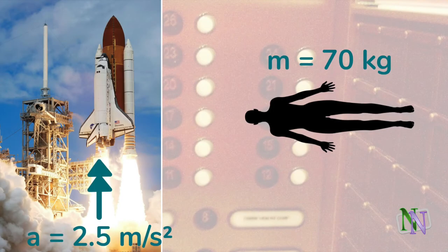Here is the information. Her acceleration is 2.5 metres per second squared, and her mass is 70 kilograms. The next step is to draw a free body diagram.